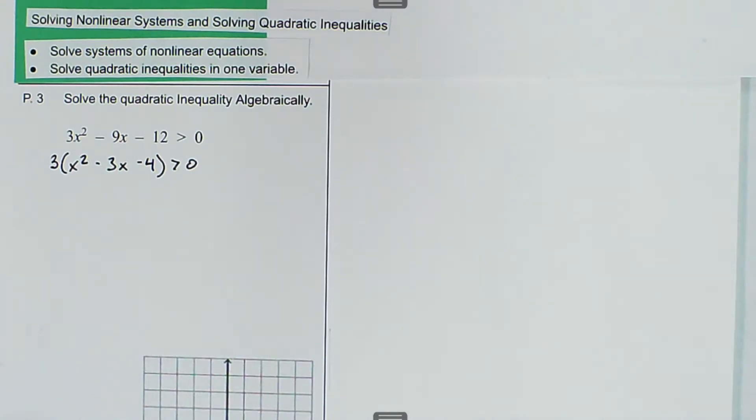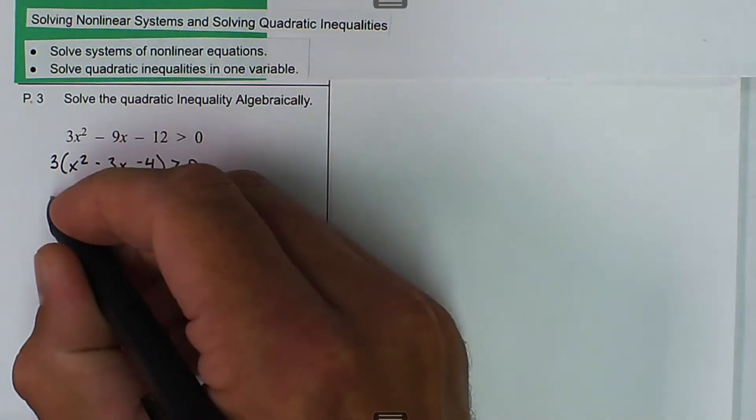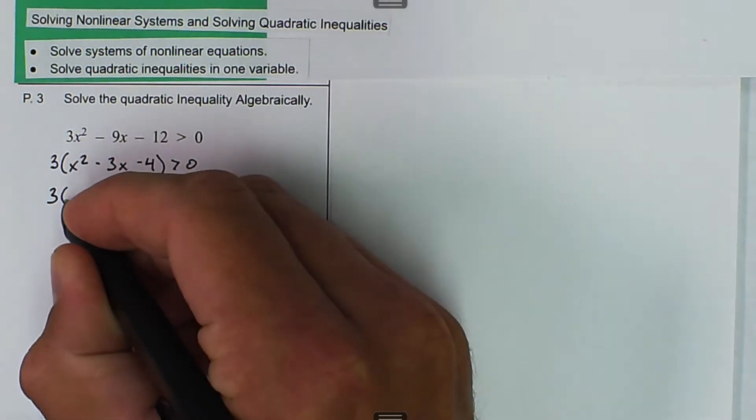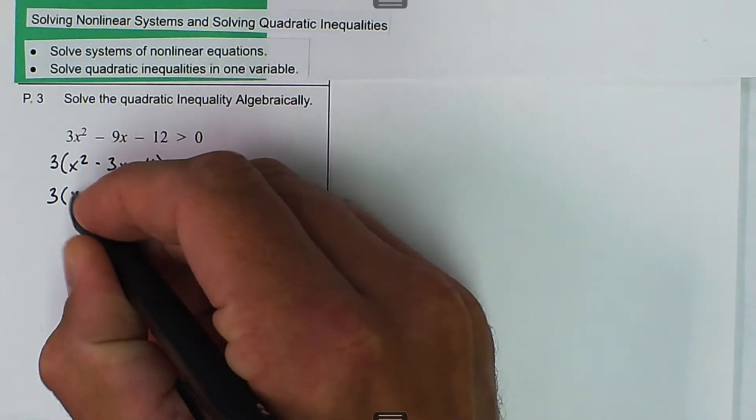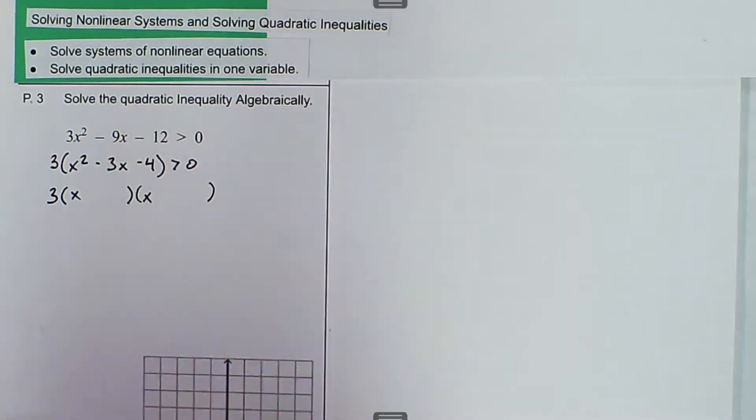And then we can factor this into two binomials. So we get 3 times, write our binomial down, and then we get x and x.